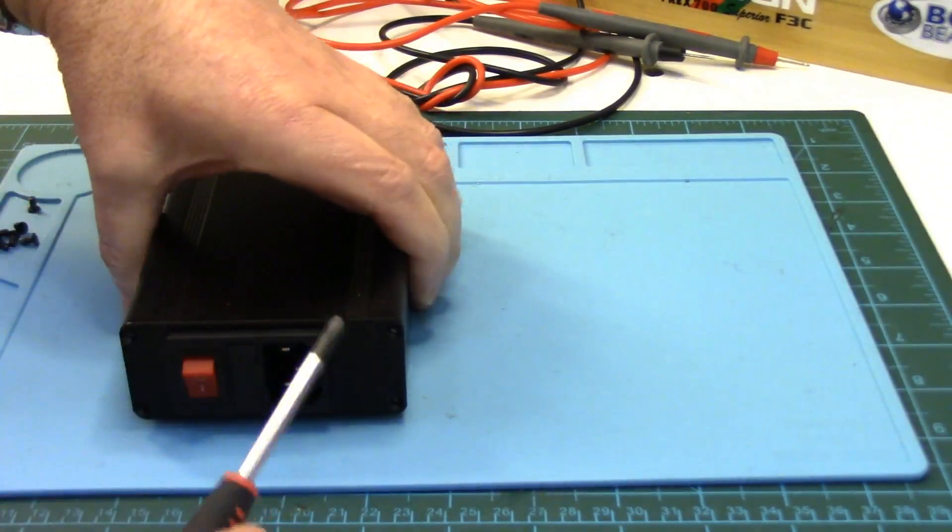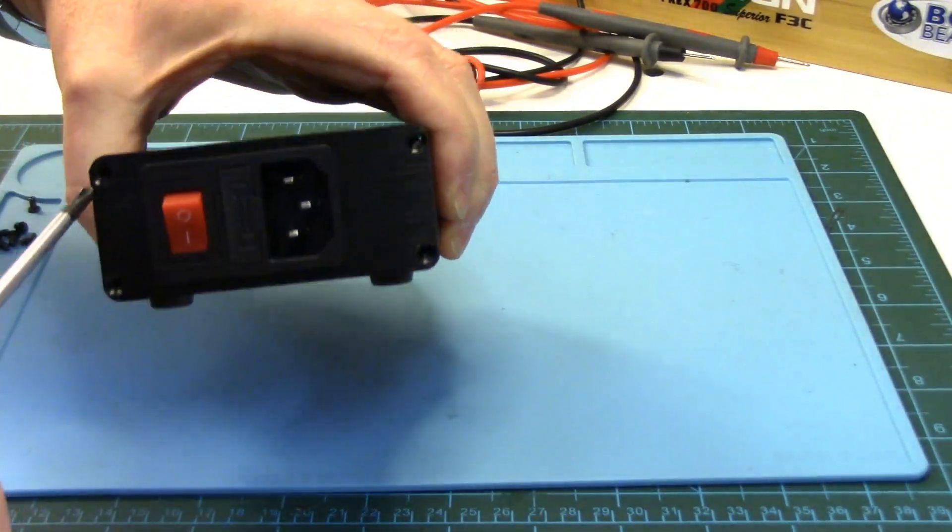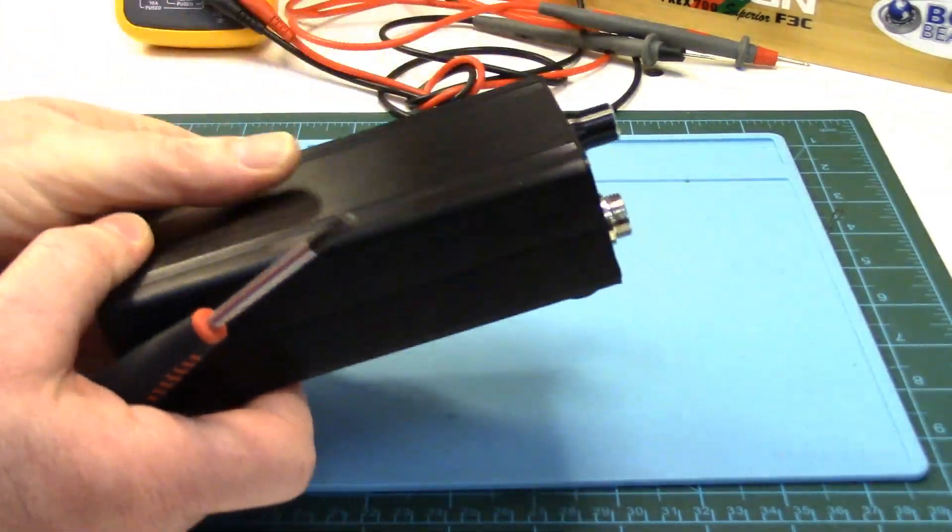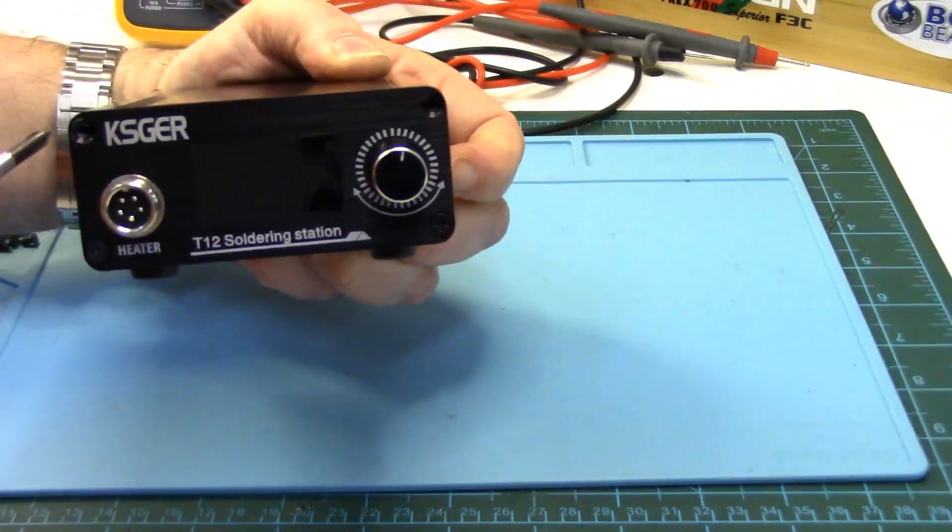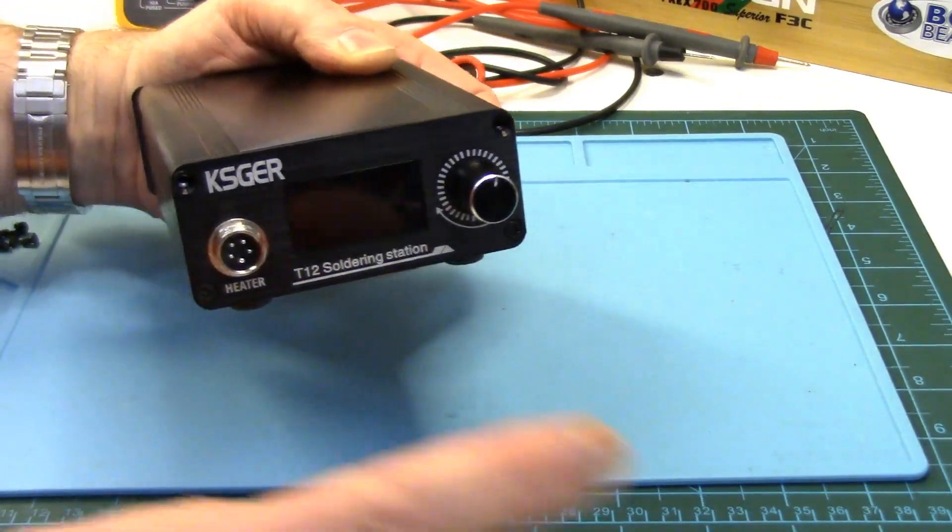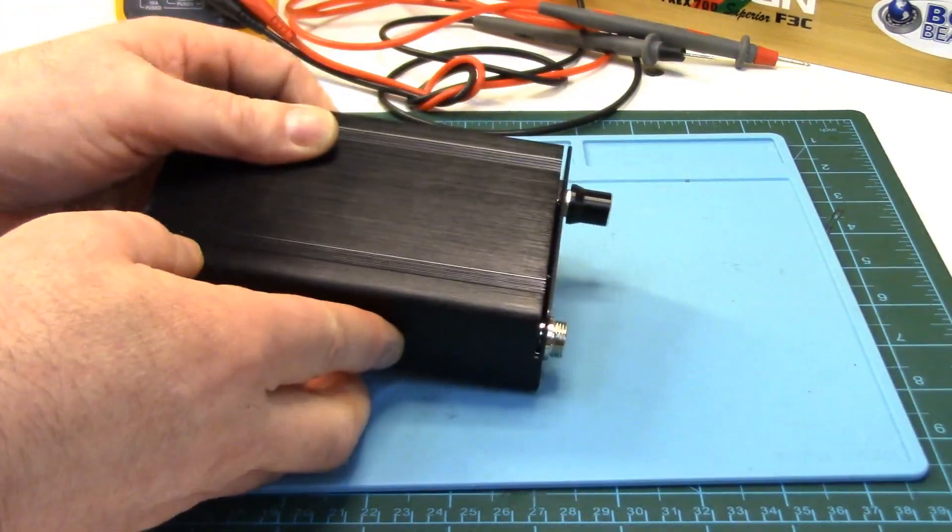So to get these open you just have to take the four phillips screws out of the back plate and on the front plate you just need to take the top two phillips screws out, not the bottom ones because this front plate will be staying on the base of the unit.